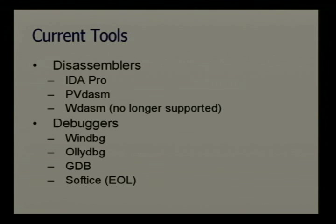WinDbg has gotten way better. It has great support for symbols. You can use the DT command to dump complete structures. If you're working in kernel mode, it's great. OllyDbg is probably the best user-mode debugger available for Win32 — it has a great plugin architecture, lots of plugins are written for it, and there's scripting available. For Unix platforms, it's pretty much GDB.